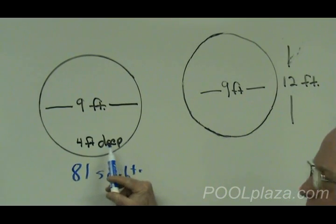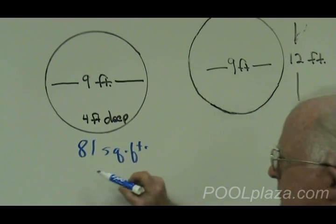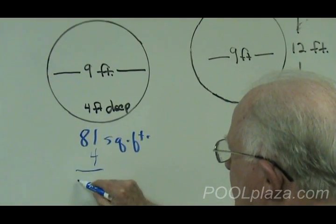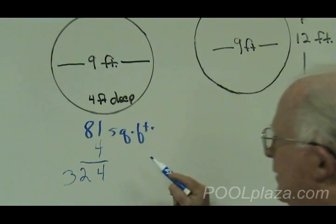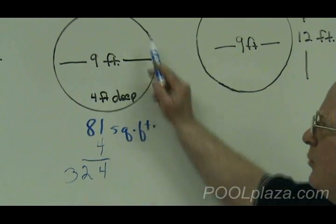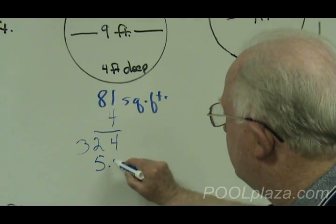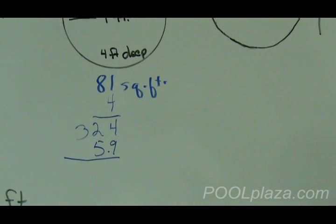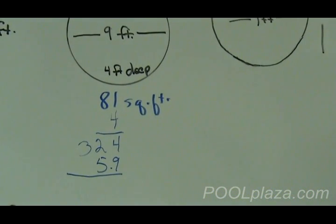This pool has a uniform depth of 4 feet. Multiply the surface area times the depth of 4. And multiply the number of cubic feet in a round pool by 5.9. And that will give you a size of 1,912 gallons for that pool.